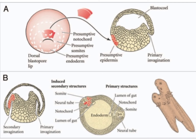This experiment clearly showed that the dorsal blastopore lip of the gastrula had the ability to induce the formation of the neural plate in the ectoderm of the host. This phenomenon is called neural induction. Other parts of an embryo can similarly induce the formation of other structures. This influence of one structure in the formation of another structure is called embryonic induction.